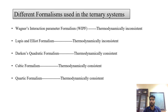There are basically different formalisms used in ternary solutions. One of the popular ones is Darken's Quadratic Formalism. In such formalism, there is an expression that represents the excess free energy of the system. For example, if we increase one order, so if we have a third order polynomial, that represents the excess free energy of the system.